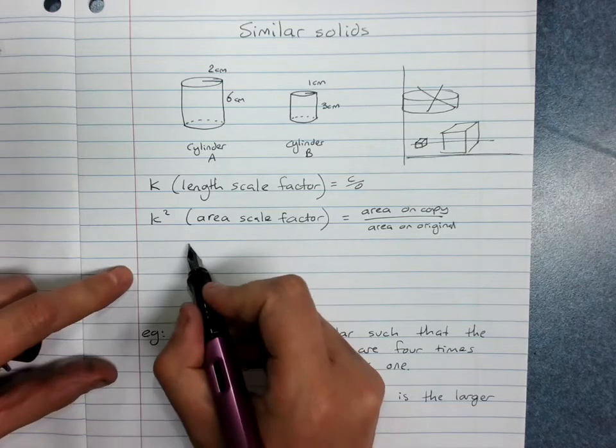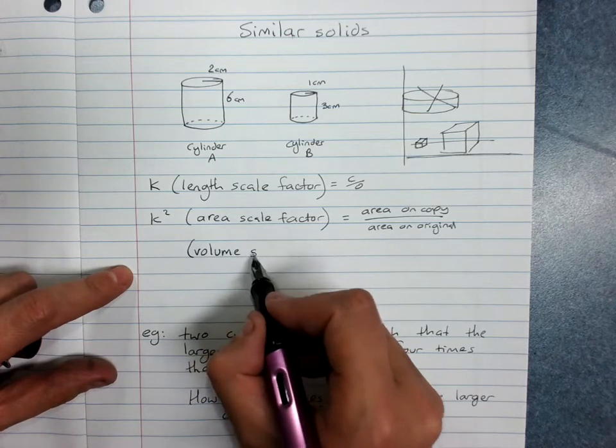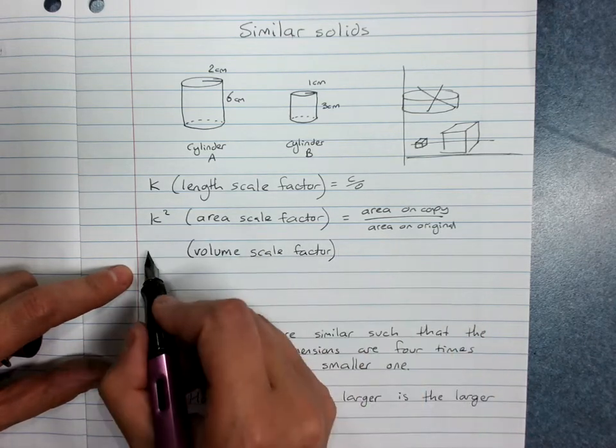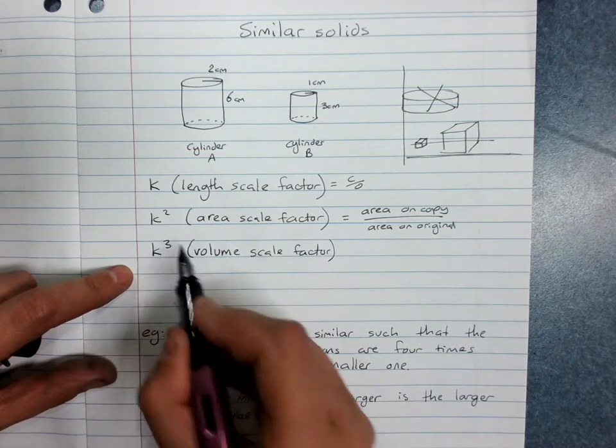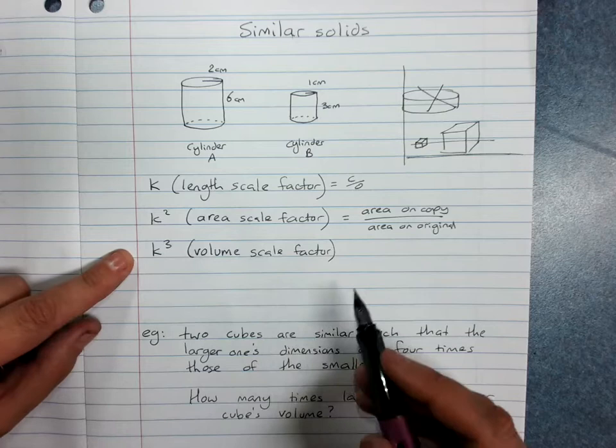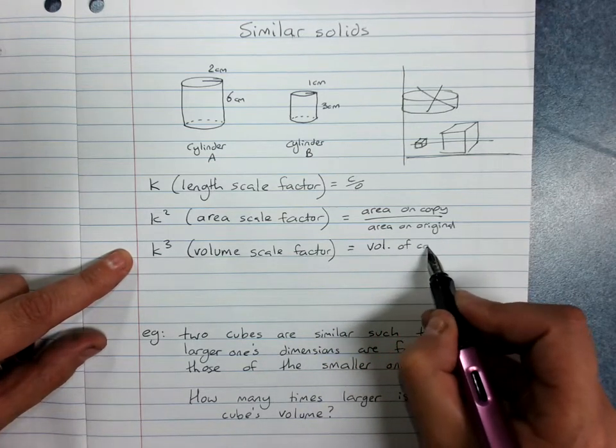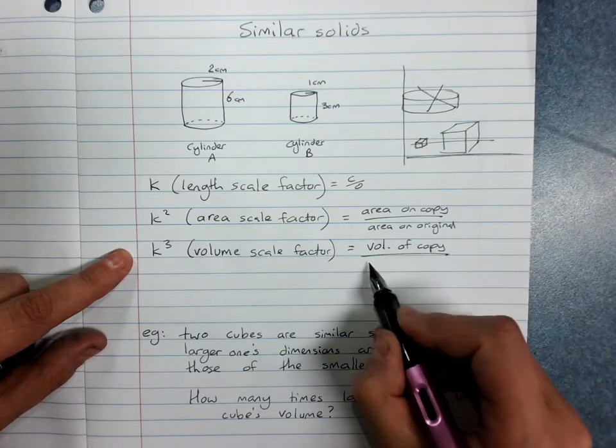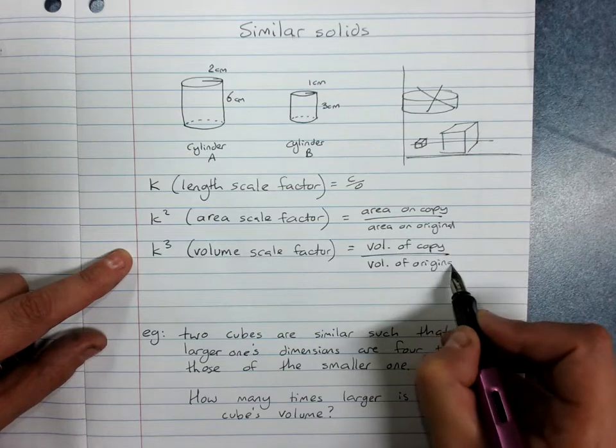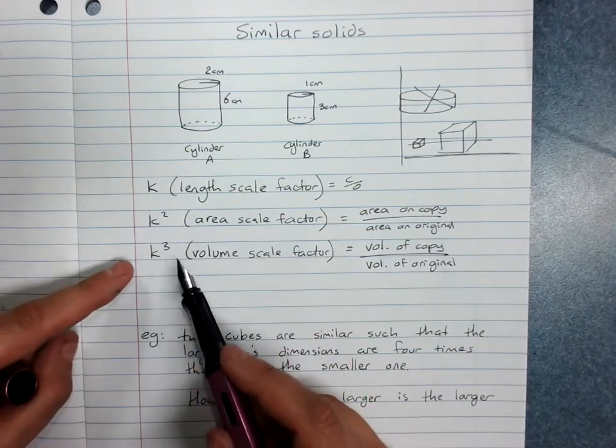And the volume scale factor is the third one we need to learn. And no prizes for guessing, this is k cubed. And again, you can find it in two different ways. You can do volume of the copy divided by the volume of the original, or you can just find the length scale factor and cube it.